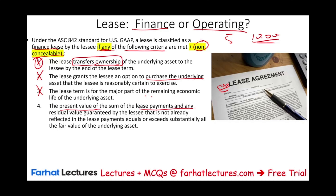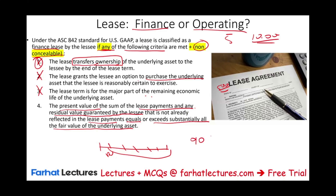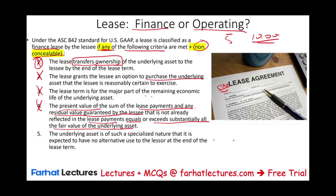The fourth condition: the present value of the sum of the lease payments and any residual value guaranteed by the lessee — not already reflected in the lease payments — should equal or exceed substantially all the fair value of the underlying asset. If that number equals 90% or more of the fair market value of the asset, you technically bought the asset and therefore have a finance lease. The fifth condition: the underlying asset is of such a specialized nature that it's not expected to have any alternative use to the lessor at the end of the lease term — meaning the asset cannot be used by anyone else except you. If you don't meet any of these five conditions, it is an operating lease.